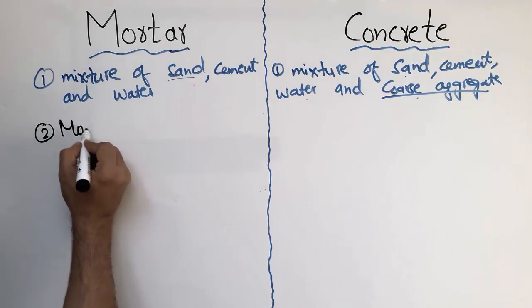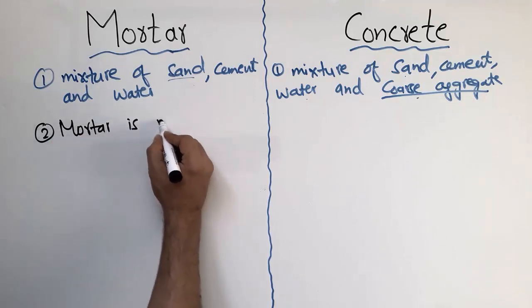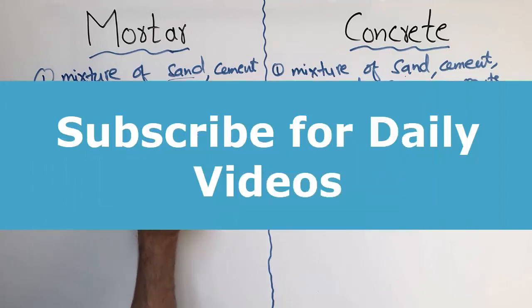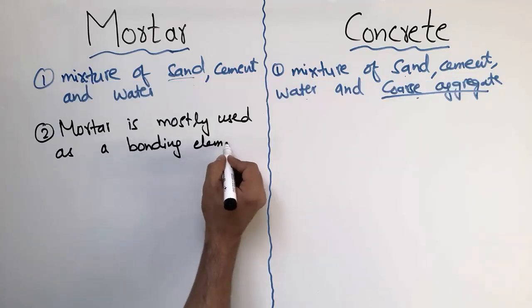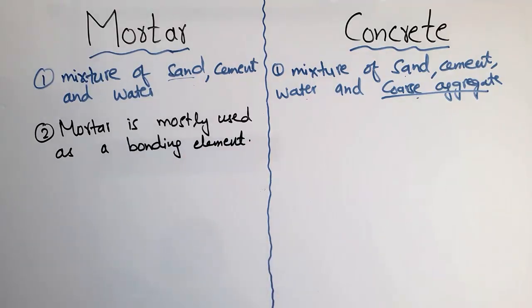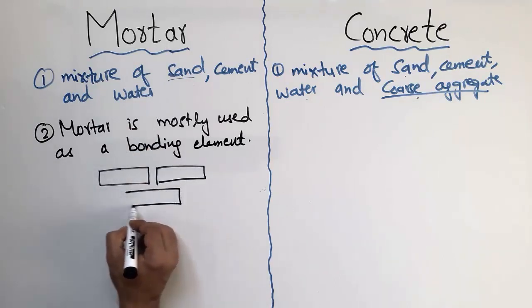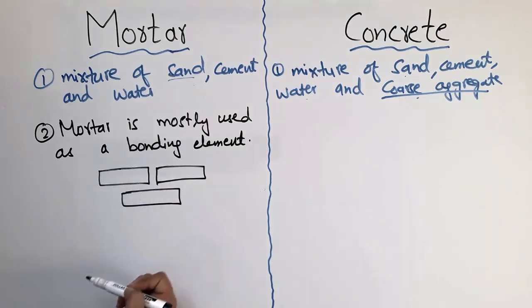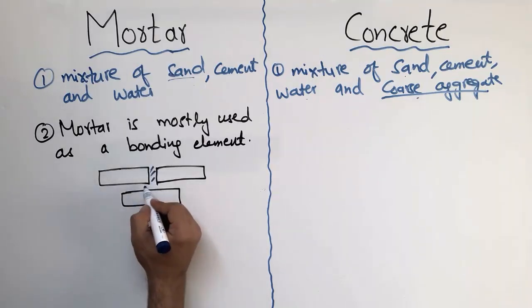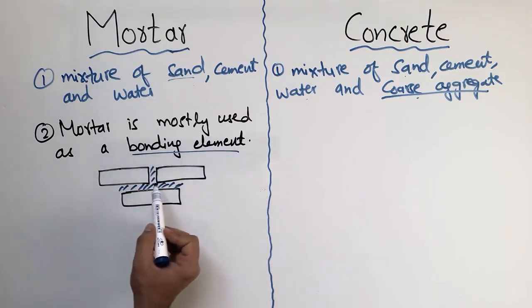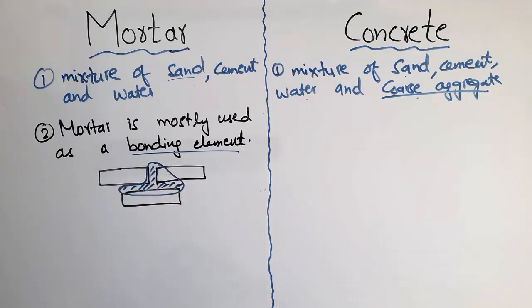The second difference is that mortar is mostly used as a bonding element — it helps in bonding two different materials. For example, consider one brick laid below two other bricks; we place mortar in between these bricks to have a good bond. That's why mortar's main purpose is bonding — it helps connect materials together.